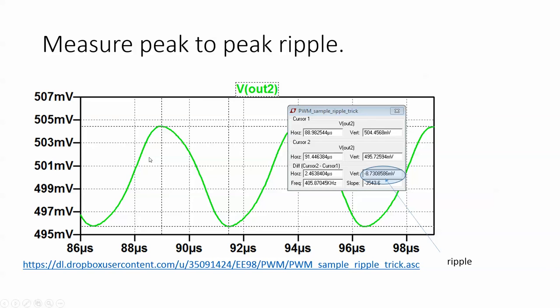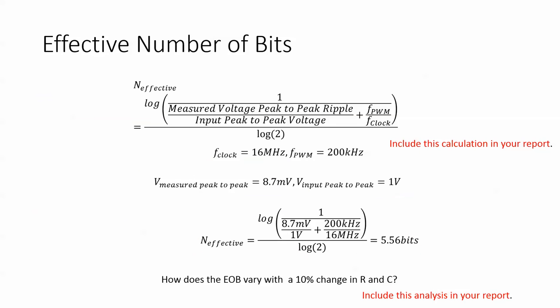But this is the plot that you need to include where I measure from here to here. It's 8.7 millivolts. And then you need to do this calculation, which in this case gave me an effective number of bits of 5.56 bits. So you have to include this calculation.